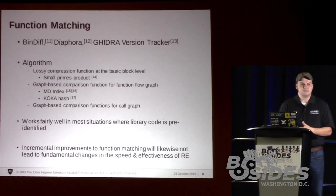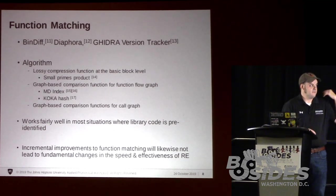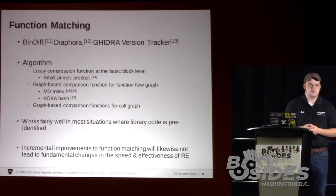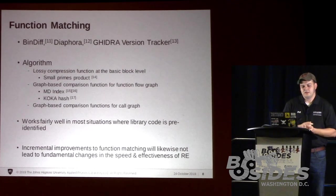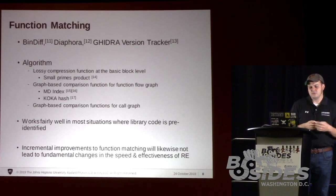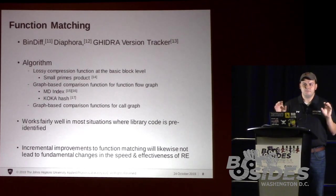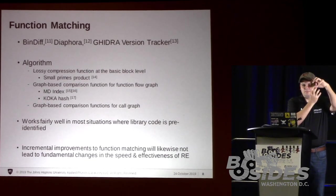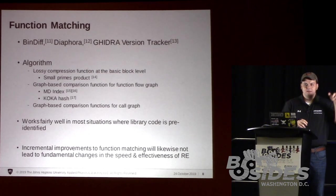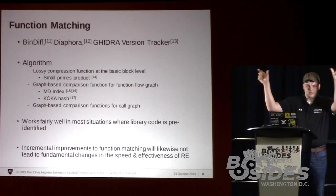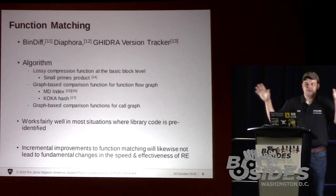I'll put out my slides after this and you can see I've got everything with references all the way through, so you can certainly check those out later. They all sort of work the same way: they take the basic blocks of the function and take some signature of that — like lossy compression — converting the bits and bytes within a basic block into a hash or some compressed representation, then doing basically a graph match, taking the control flow of two graphs and matching them that way.